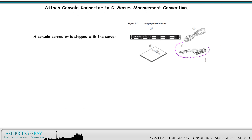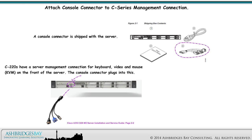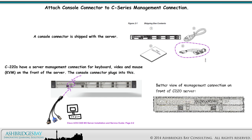A console connector is shipped with the server. C220s have a server management connection for keyboard, video, and mouse on the front of the server. The console connector plugs into this connection. Here's a better view of the management connection on the front of the C220 server. Use the console connector to connect to the management connection on the front of the server to gain access to the server console.